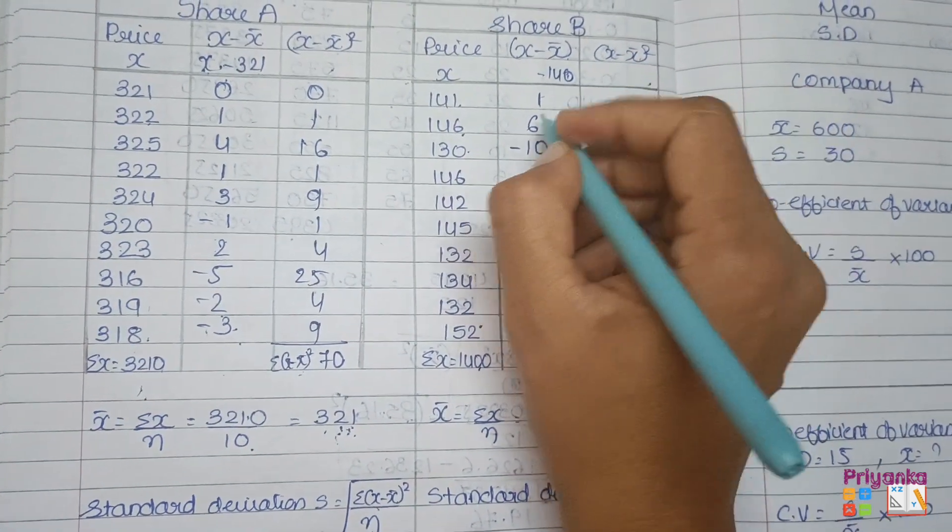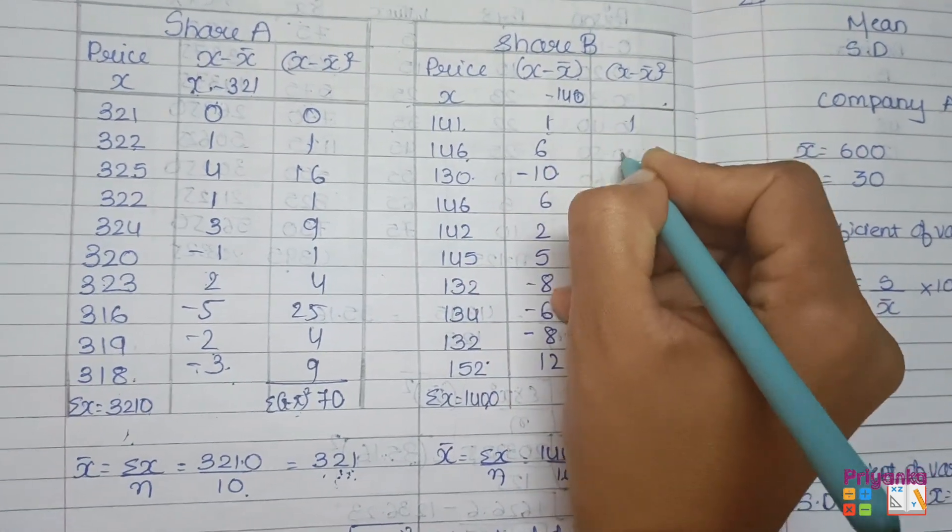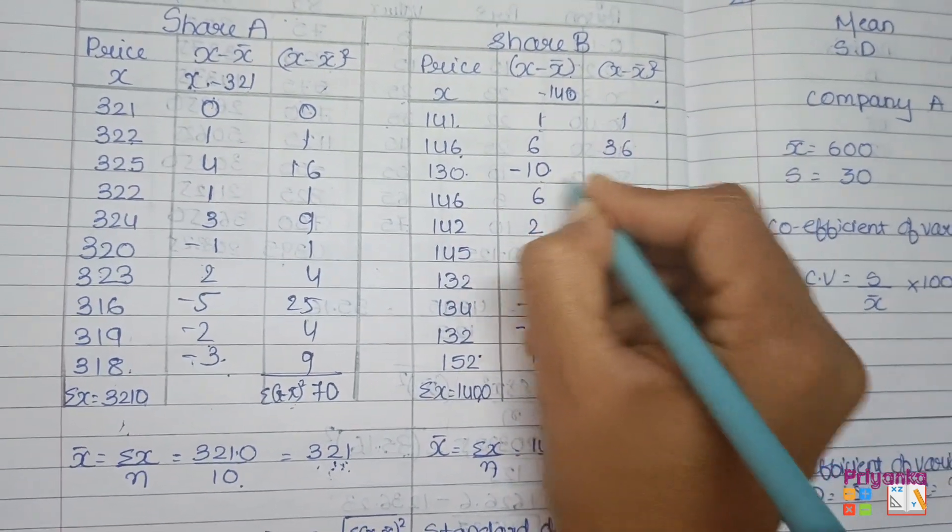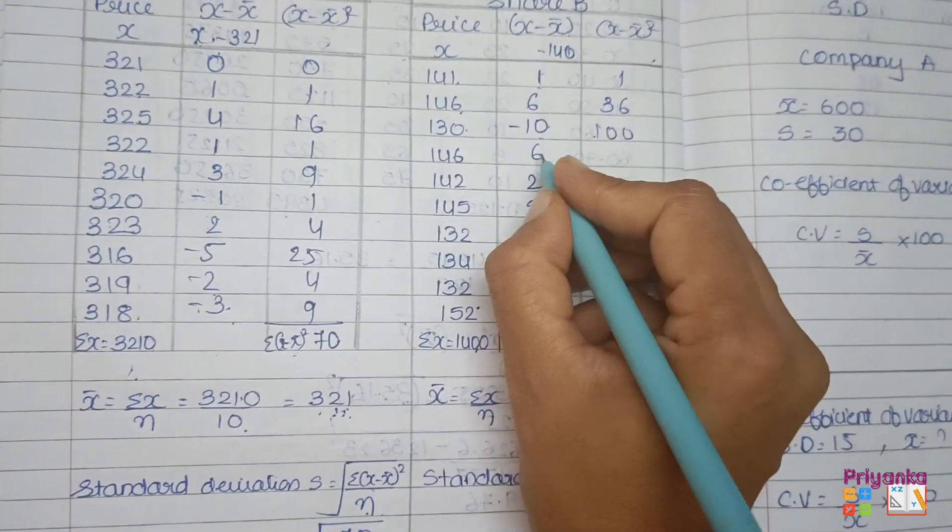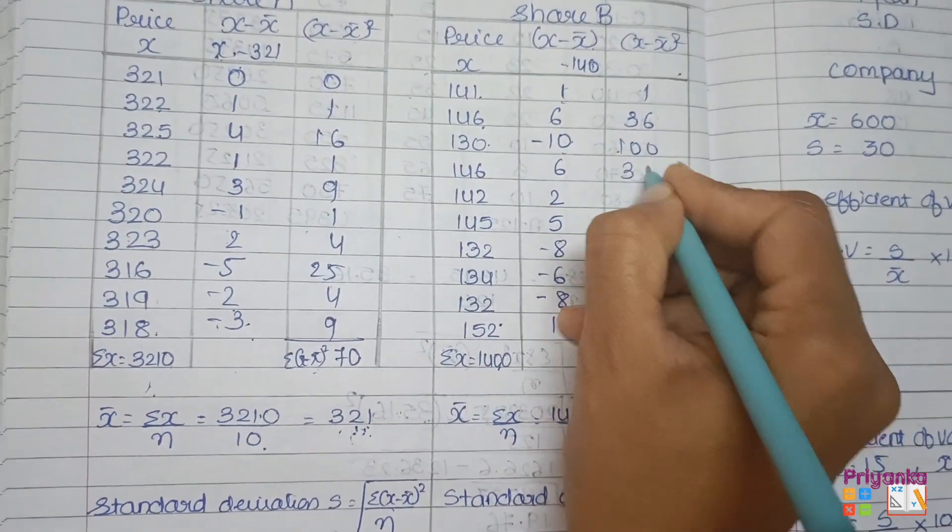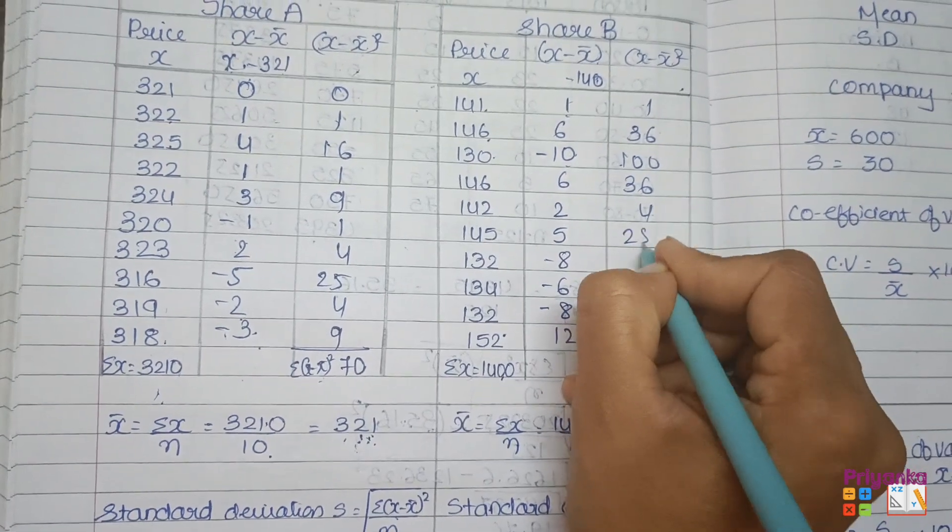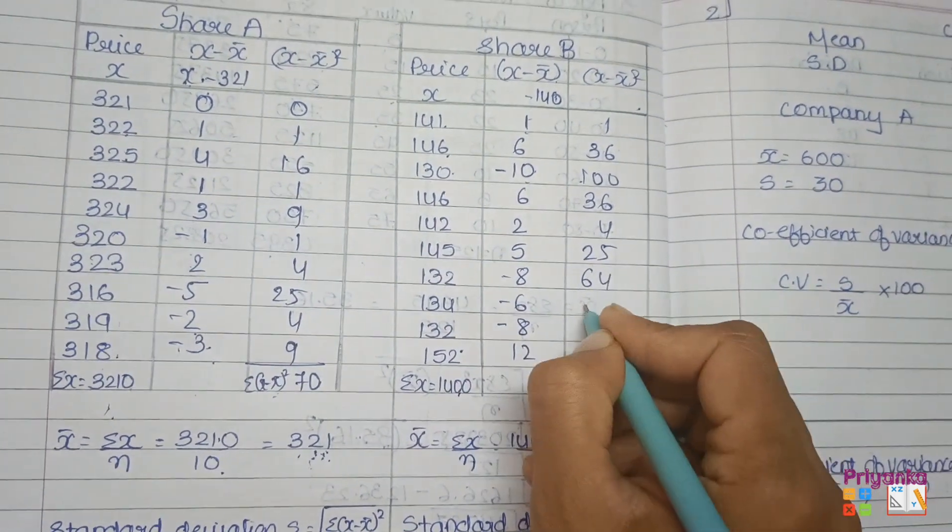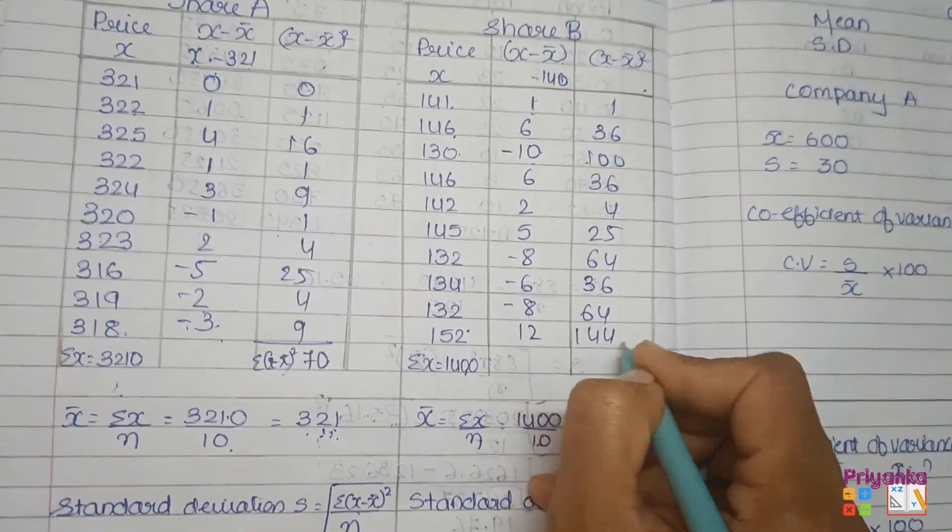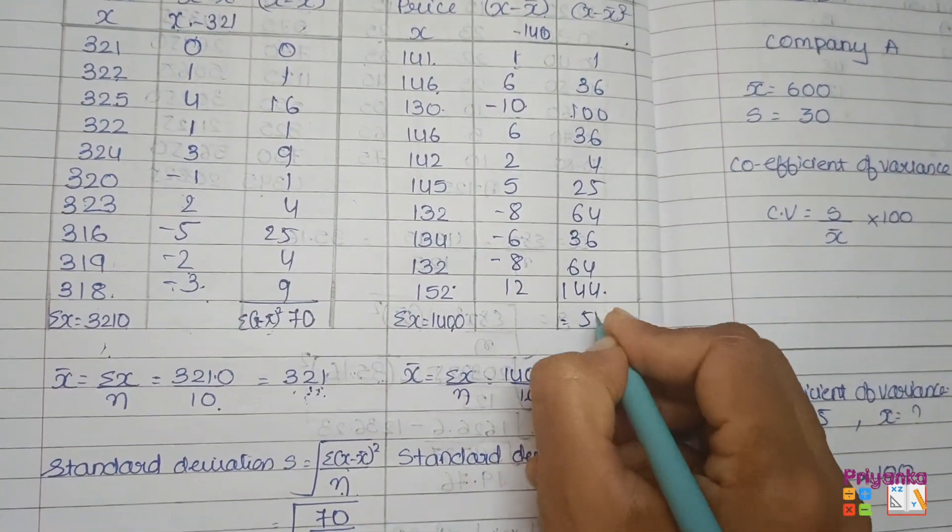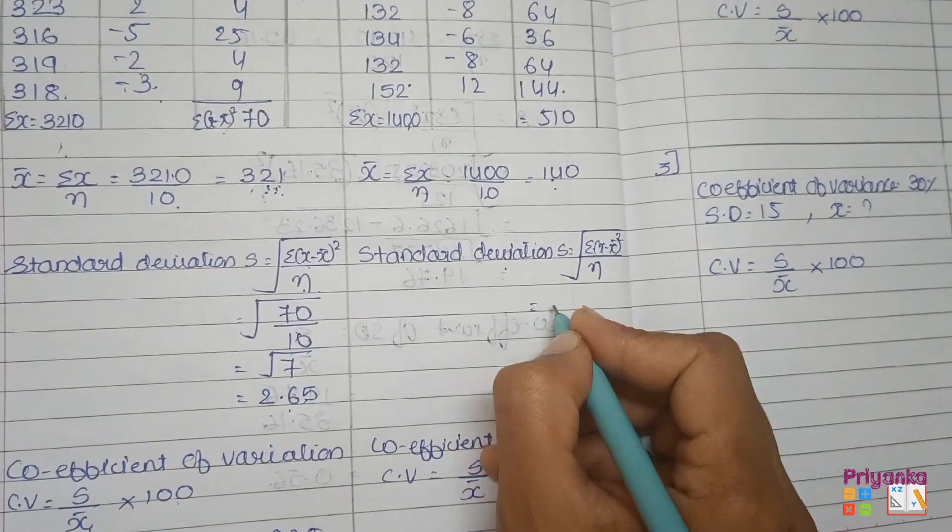Then we will find the square of this column: 1 squared is 1, 6 squared is 36, 10 squared is 100 (and minus minus sign will turn into plus), then 36, 4, 25, 64, 36, 64, and 12 squared is 144. And the total of this is 510.